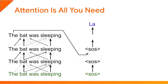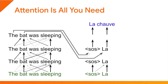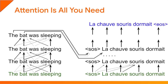During inference, just like for the regular encoder-decoder architecture, we can use the model to predict one word at a time. We start with the SOS token, and the model hopefully predicts the first word. Then we append this word to the decoder's input sentence and run the model again, and so on.